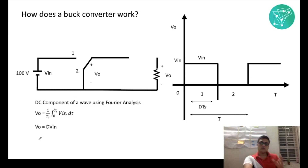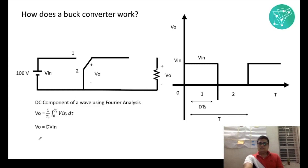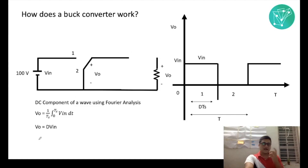For example, say you needed an output voltage of 50 volts and you had an input voltage of 100 volts — what would your duty cycle be? We'll see if you guys get that answer right, so leave your answers in the comment section below. Now, coming to the actual representation of the buck converter.